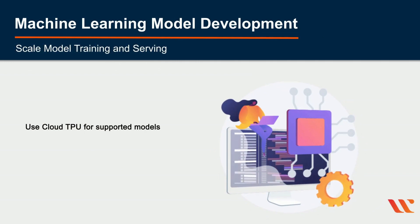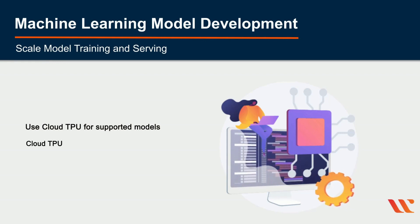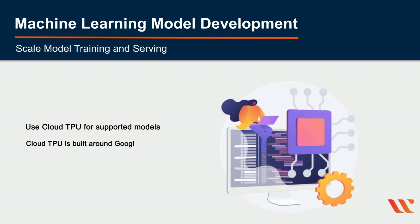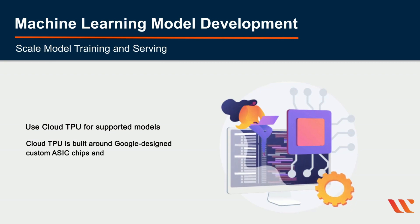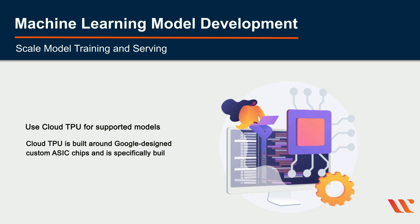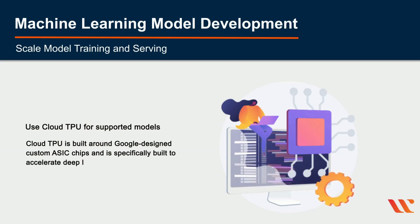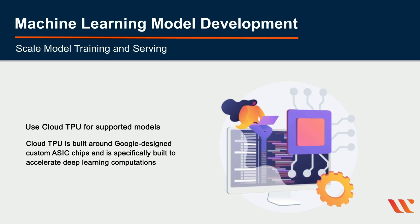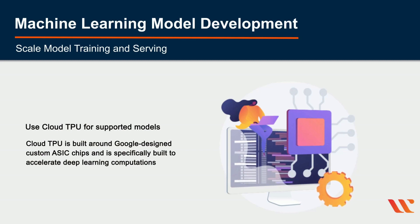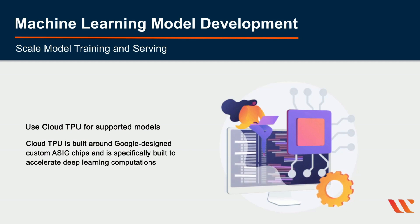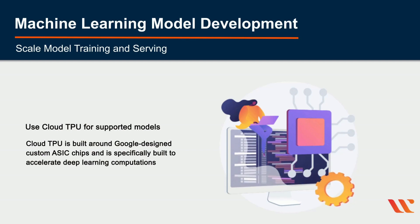Use Cloud TPU for supported models. If you are training one of the officially supported models for TensorFlow or PyTorch, use Cloud TPU. Cloud TPU is built around Google-designed custom ASIC chips specifically built to accelerate deep learning computations. You can run training jobs on AI Platform Training using Cloud TPU, which offers pricing that can significantly reduce costs.